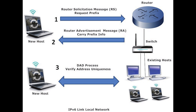The node sends out a neighbor solicitation query to the new address and waits for a response. If the node does not receive a response, the address is assumed to be unique. If the node receives a response in the form of a neighbor advertisement, the address is already in use. If a node determines that its tentative IPv6 address is not unique, auto-configuration stops and manual configuration of the interface is required.